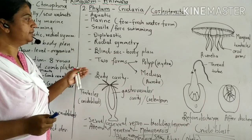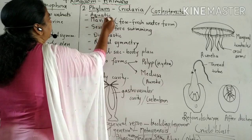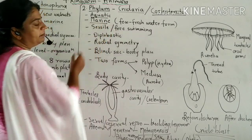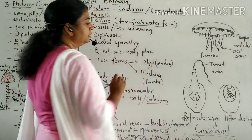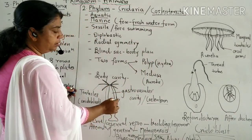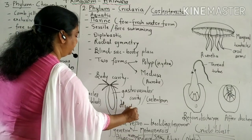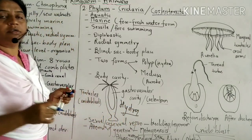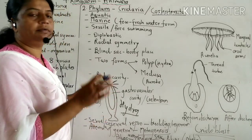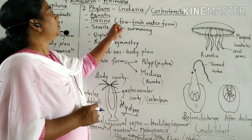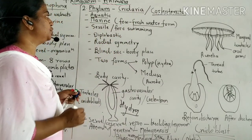The animals of this phylum are aquatic and most of them are marine. Only a few forms are freshwater. For example, some species of Hydra are freshwater while others are marine. So most of them are marine and only a few forms are freshwater.